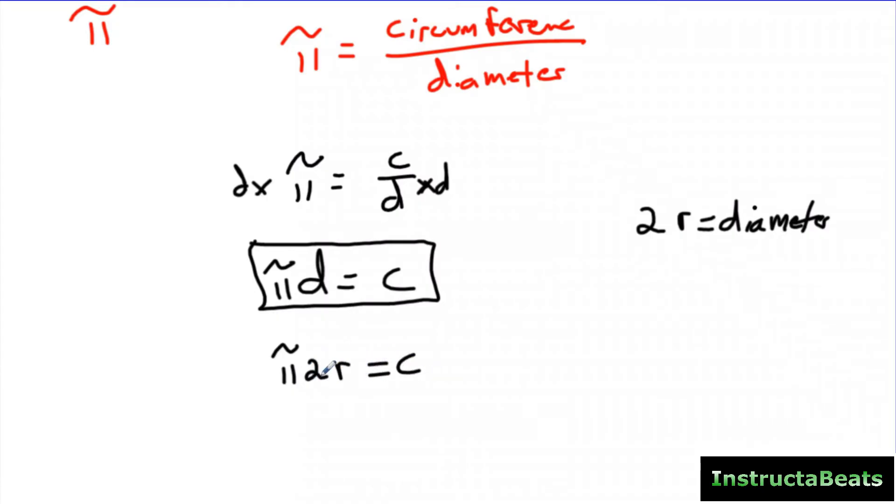So pi 2r equals circumference. And that's another formula. Now, math convention says that we need to take the coefficient, we need to take that number, and we need to put it at the front. So typically, what you're going to see is 2πr, and that is going to tell you the circumference of your circle. This is the most used formula, but this is the exact same thing as saying pi times the diameter, because the diameter is equal to 2r. And that's where the formula for the circumference of a circle comes from.